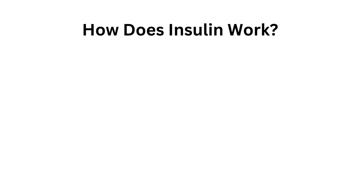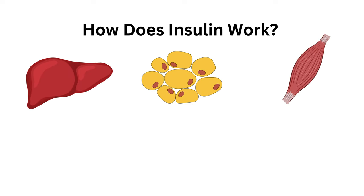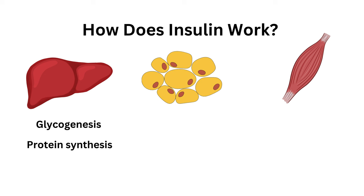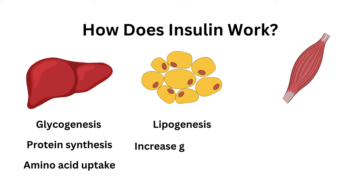So how does insulin bring down the blood glucose level? It acts on the liver, adipose tissue, and muscle. In the liver, it promotes glycogenesis — the production or generation of glycogen. It also causes protein synthesis and increases amino acid uptake, since you need more amino acids to make more proteins. In the adipose tissue, it promotes lipogenesis — the production of lipids — and it increases glucose uptake in order to bring that blood glucose level down in the blood.